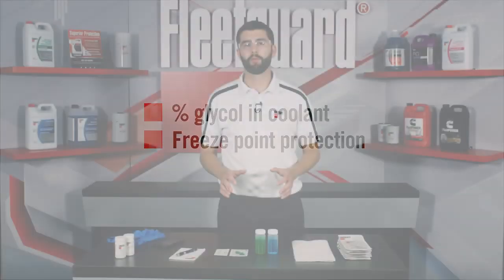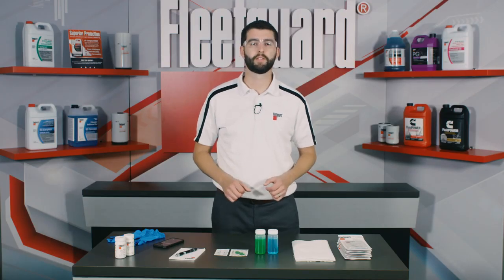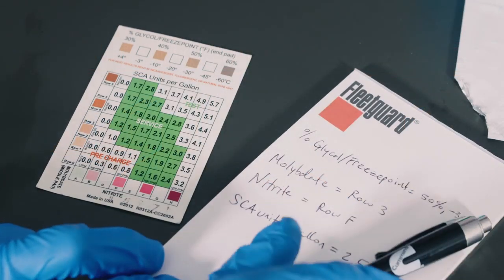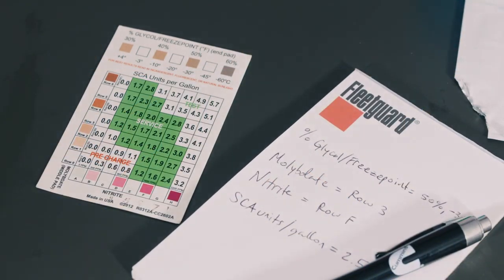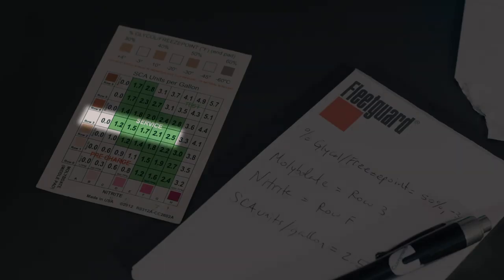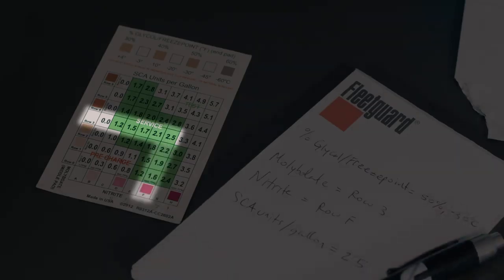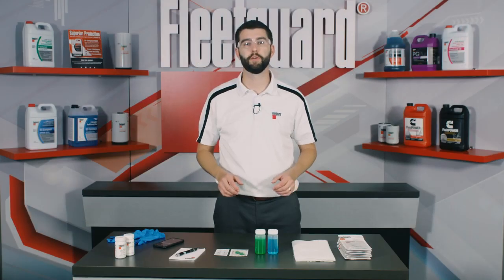Now let's go back to the molybdate and nitrite results we wrote down during testing. We'll need to find the intersection point for the results to get our remaining SCA units per gallon. For molybdate, we noted row 3, and for nitrite, the results were in column F. These results intersect in the green section of the chart at two and a half SCA units per gallon. At this point, we've successfully completed the testing procedure.